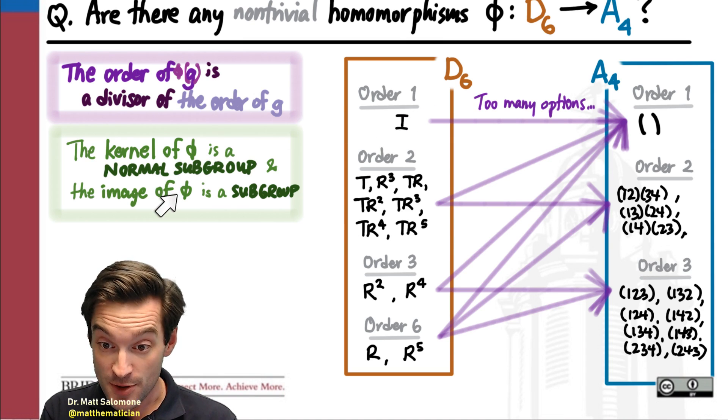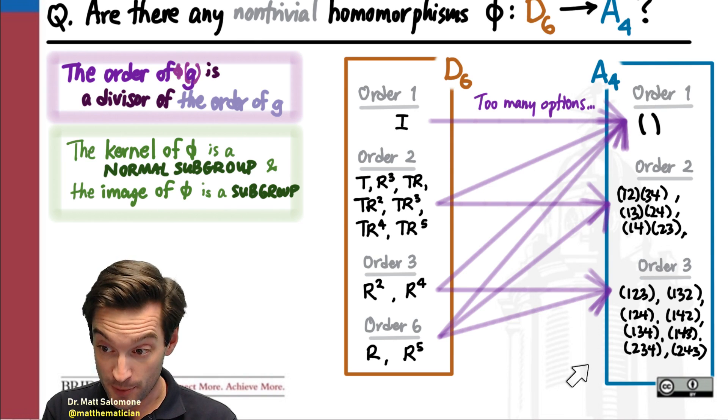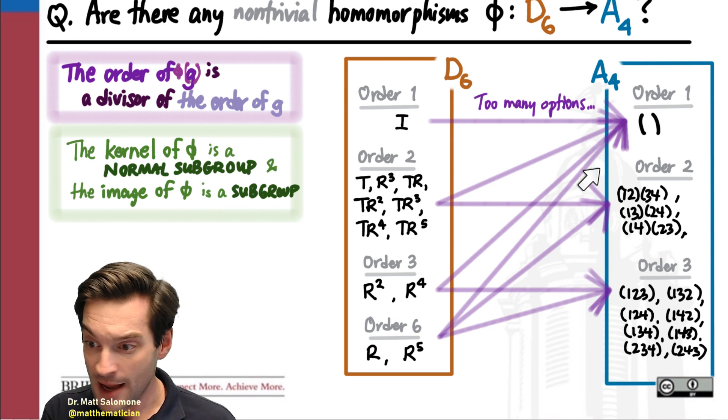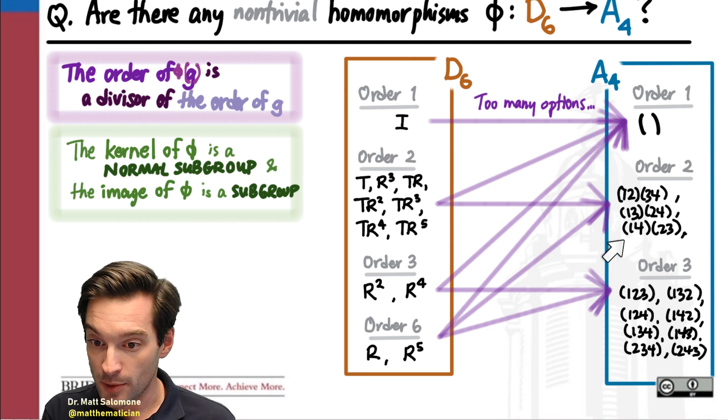And also, the image of a homomorphism is always a subgroup of the target group. Not necessarily normal, but we know for sure that it will be a subgroup.